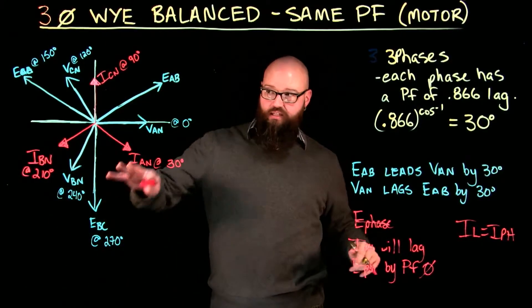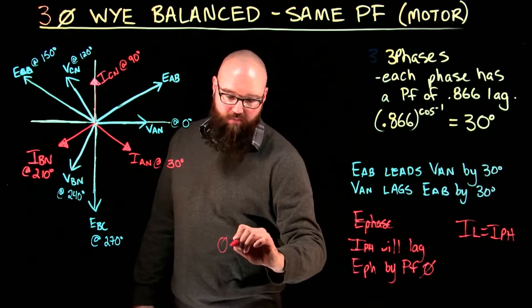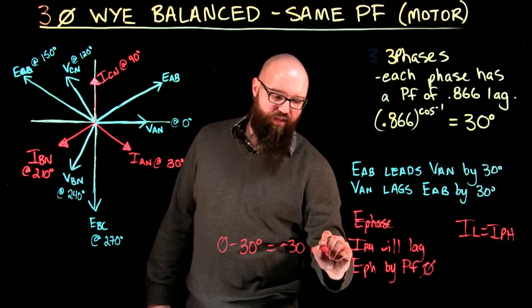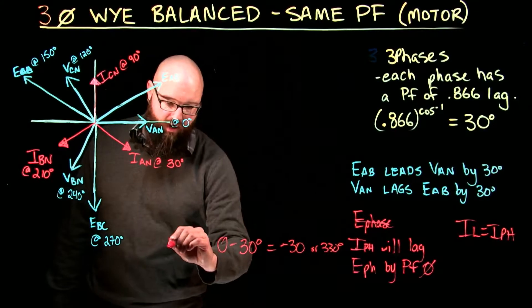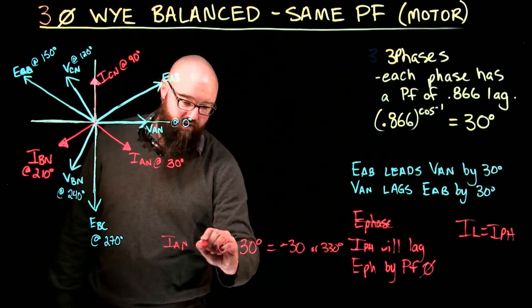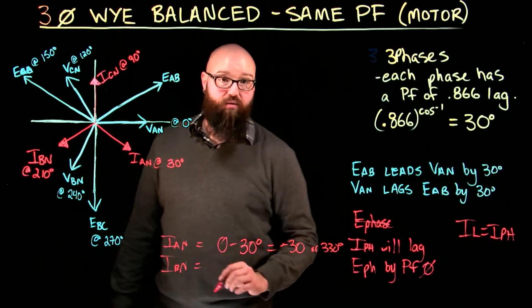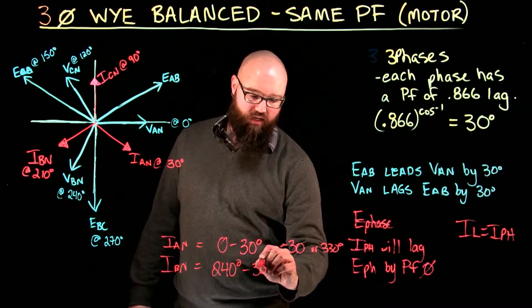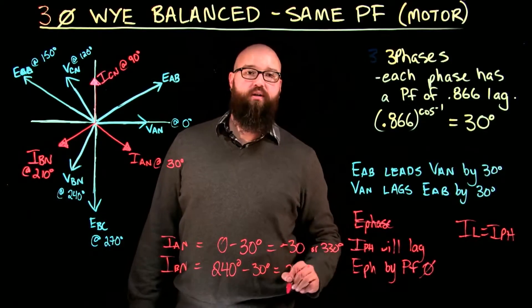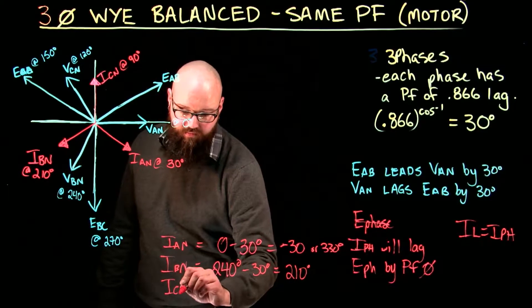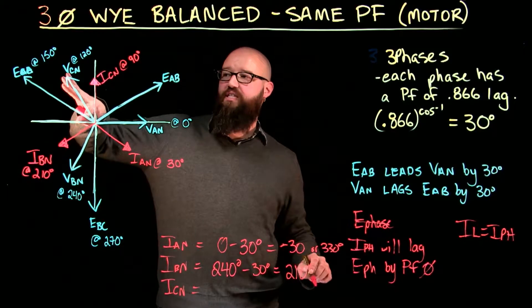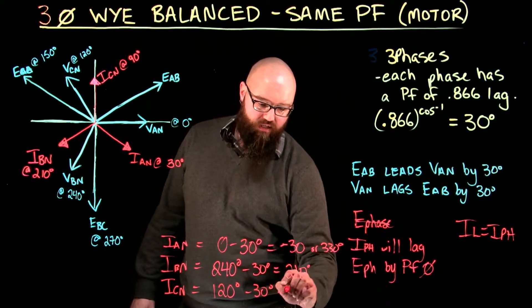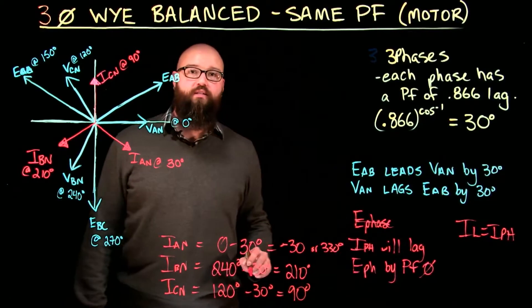Just to recap, in this particular circuit, we know that 0 minus 30 degrees equals, well, negative 30, or 330 degrees. There's my iA to N. iB to N, we said was 240 volts, is where my phase voltage is, minus 30, equals 210 degrees. And my iC to N, which we said my vC to N, or my phase voltage, was at 120 degrees, minus 30 degrees, 90 degrees.